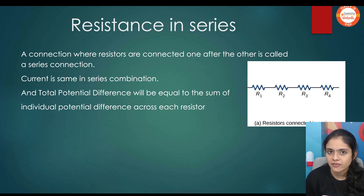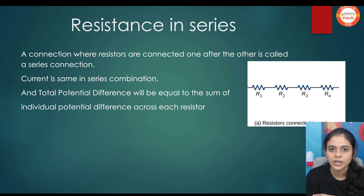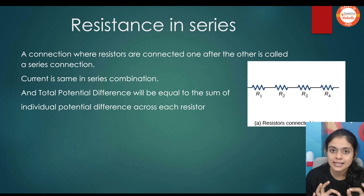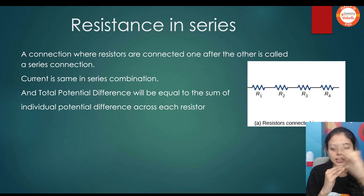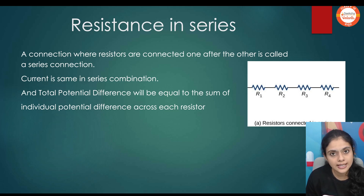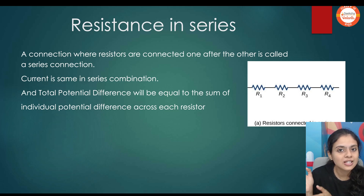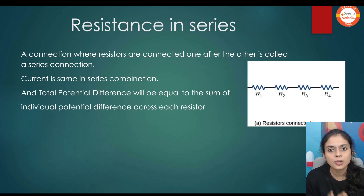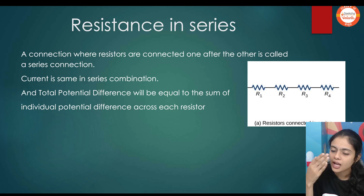In real life, there is nothing like just one resistor or one lamp — there will be a combination of multiple things. In a series combination, if resistances are connected one next to the other, the equivalent resistance is equal to the sum of each resistance: RS is equal to R1 plus R2 plus R3 and so on.